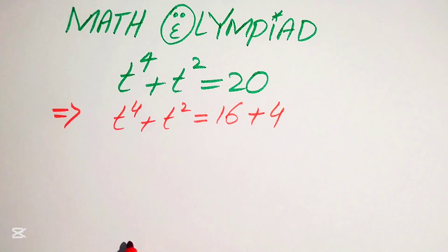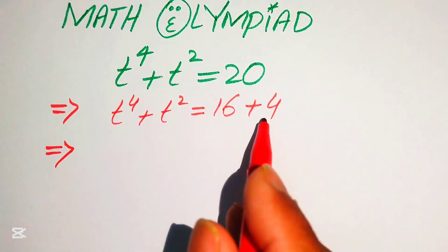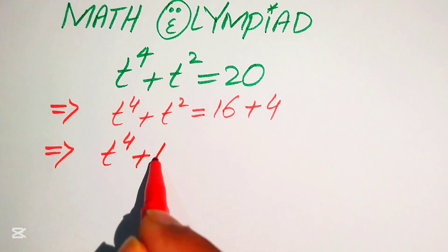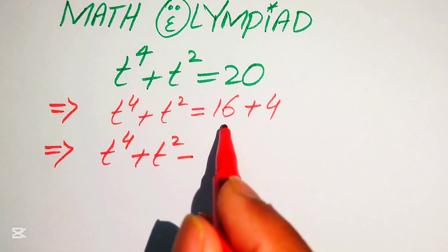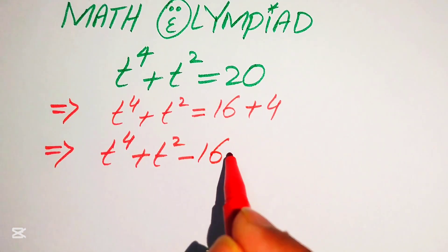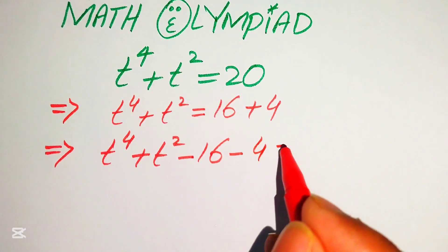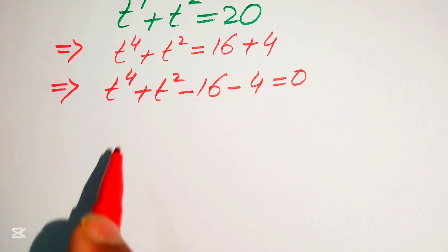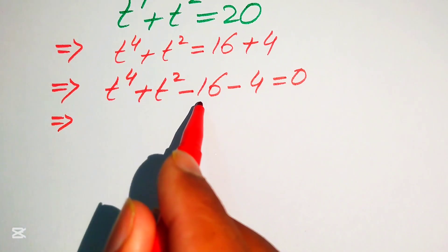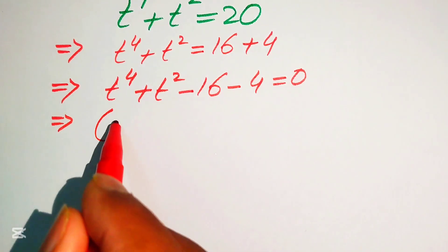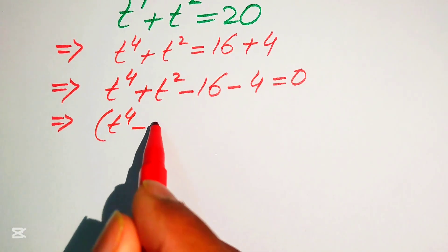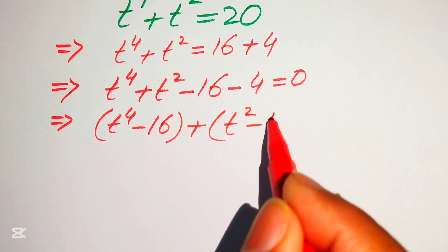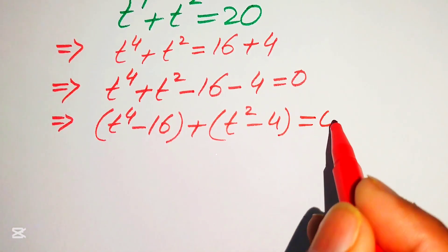16 plus 4 equals 20. Now we move these two values to the left hand side: t to the power of 4 plus t squared minus 16 minus 4 equals 0. We pair t⁴ with 16 and t² with 4, giving us t⁴ minus 16 plus t² minus 4 equals 0.